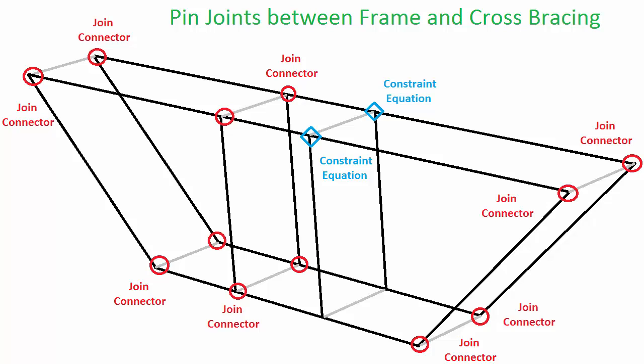Also, in order to use the connectors and equation constraints, the cross-bracing will need to be created as a separate part from the frames. So the two frames will be created as one part, and the cross-bracing as a second part.